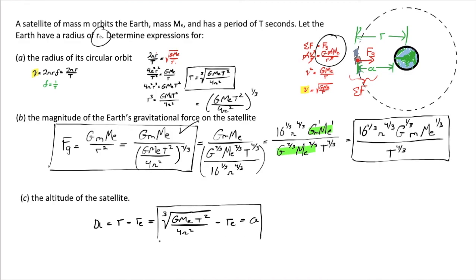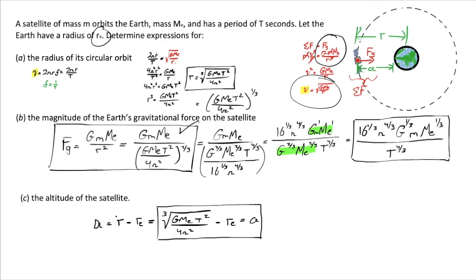So we have useful expressions for the radius of a circular orbit, the orbital velocity we derived along the way, the magnitude of Earth's gravitational force on the satellite assuming the radius is unknown, and the altitude of the satellite — which is simply the orbital radius minus the radius of the Earth.